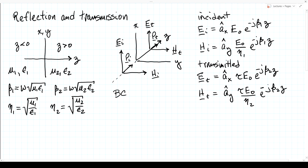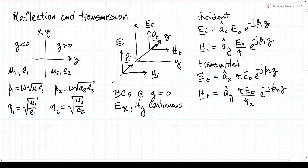Now let's think about the boundary conditions at z equal to zero, where the two media come together. The boundary conditions are that the tangential component of the electric field, which is in the x-direction, and the tangential component of the magnetic field, which is in the y-direction, must be continuous across the boundary. Let's see if we can meet those boundary conditions with just these two fields.